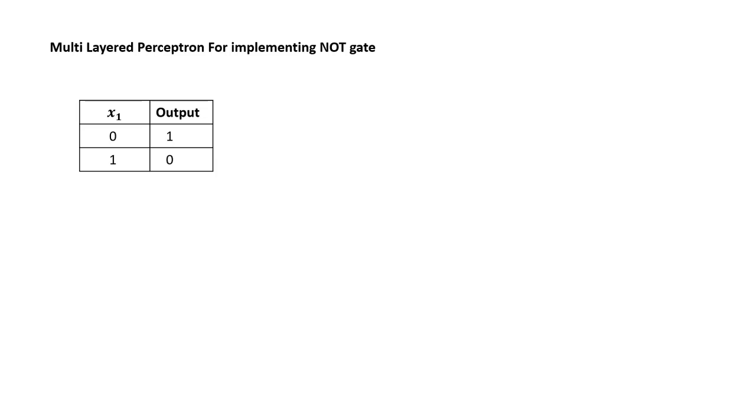And why do we need to know that? You'll get to know that shortly afterwards. This is the truth table of your NOR gate, where NOR gate does nothing — it just inverts the value. If your input is zero, NOR gate will output one. And if your input is one, NOR gate will output zero.